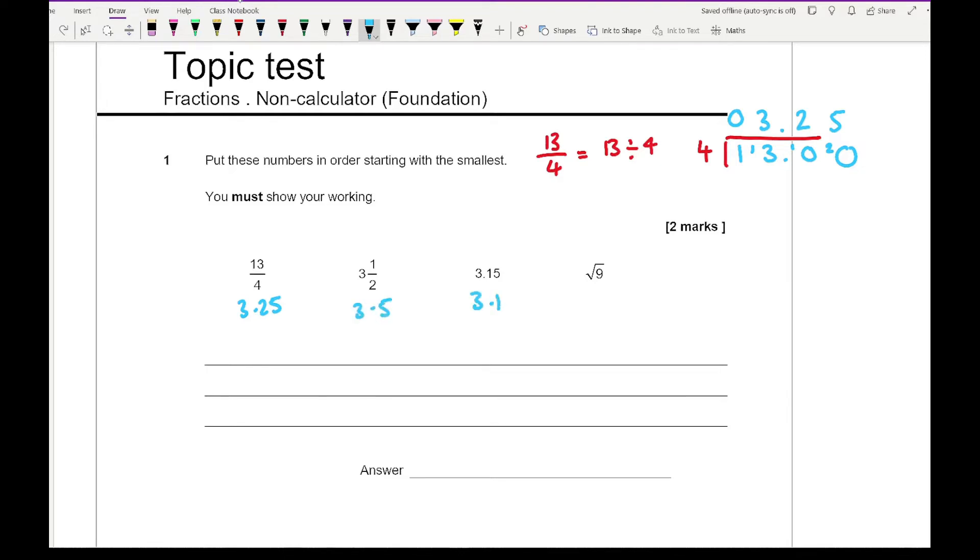3.5 is 3.5, 3.15 is already converted, and root 9 is 3. Starting with the smallest: the smallest is root 9. Notice how I'm writing the original format of the numbers, not what I've converted. The next smallest is 3.15, then 13 over 4, and the largest is 3 and a half.